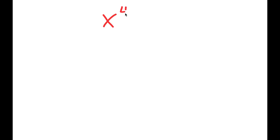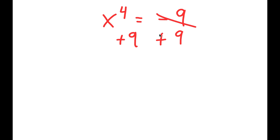Alright, so for this video, I'm going to be solving the equation x to the power of 4 is equal to negative 9. What I'm first going to do is add 9 on both sides, so these two cancel out, and I get x to the power of 4 plus 9 is equal to 0.